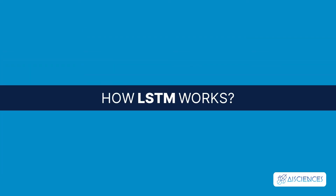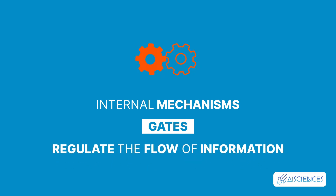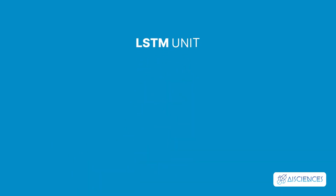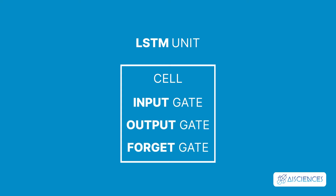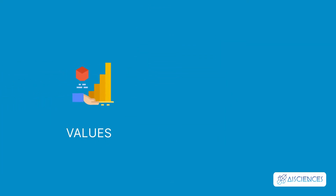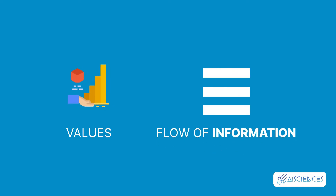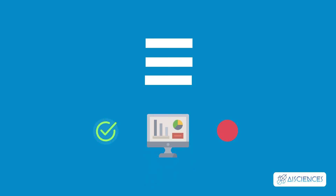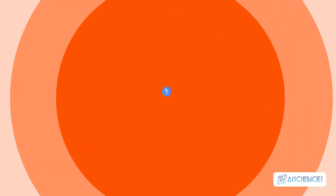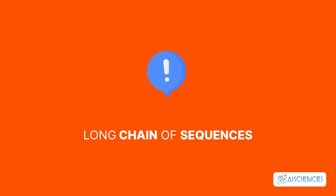Let's develop an understanding of how LSTM works. LSTMs have internal mechanisms called gates that can regulate the flow of information. A common LSTM unit is composed of a cell, an input gate, an output gate, and a forget gate. The cell remembers values over arbitrary time intervals, and the three gates regulate the flow of information into and out of the cell. These gates can learn which data in a sequence is important to keep or throw away, passing relevant information down the long chain of sequences to make predictions.